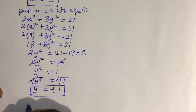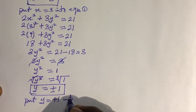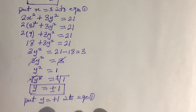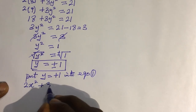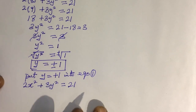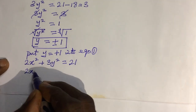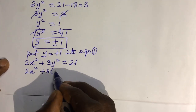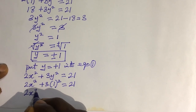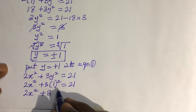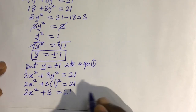Taking y = +1 and putting it into Equation 1: 2x² + 3y² = 21 becomes 2x² + 3(1)² = 21, which gives 2x² + 3 = 21.